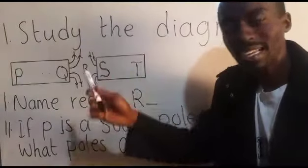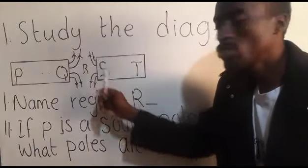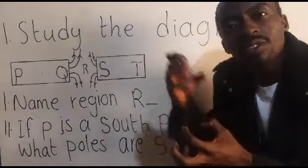These two here are what we call bar magnets. These lines are what we call magnetic field lines.